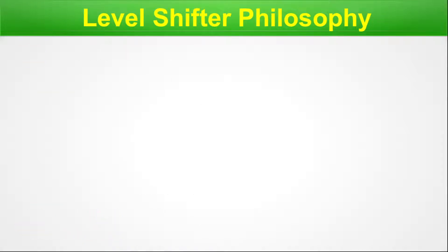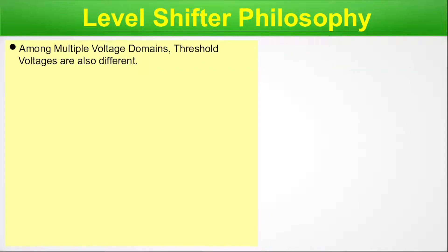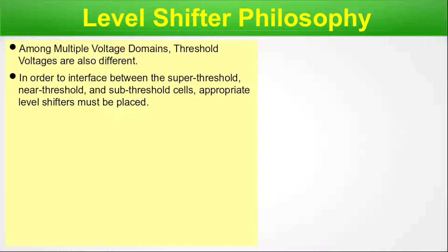Level shifter philosophy. Among multiple voltage domains, threshold voltages are also different. In standard cell distribution, you will find LVT, HVT, UHVT, and many types of VT — that is, threshold voltage variations. In order to interface between the super threshold, near threshold, and sub-threshold cells, appropriate level shifters must be placed. This kind of threshold boundary is based on the different VT dependency of standard cells from distributions like LVT, HVT, UHVT, etc.